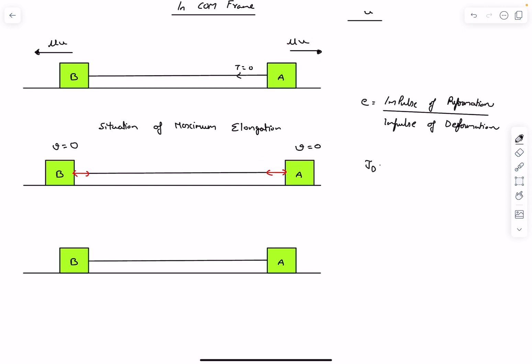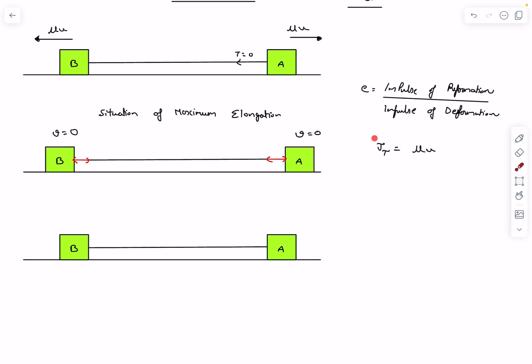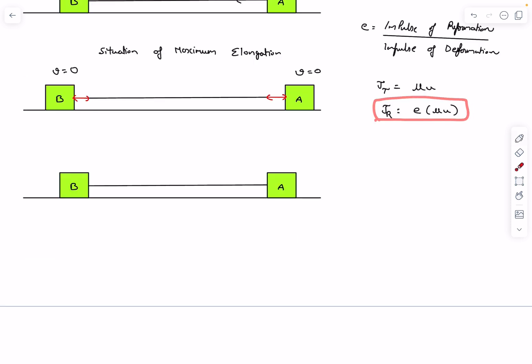So the impulse of deformation, which is the same as the impulse applied by the tension - we can say that the impulse of tension on either of the blocks is equal to the change in momentum of the blocks, which is simply going to be mu multiplied by u, and final momentum is anyway zero. So jt is simply going to be mu u. Now if we just substitute it, we can get the reformation impulse as e multiplied by mu into u. What this equation essentially says is that now the tension force will apply an impulse of jr on either of the blocks. This is the restoring impulse.